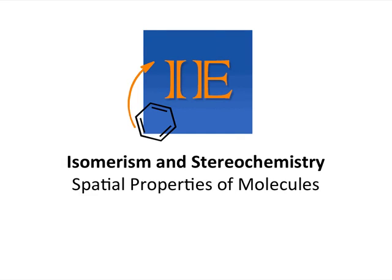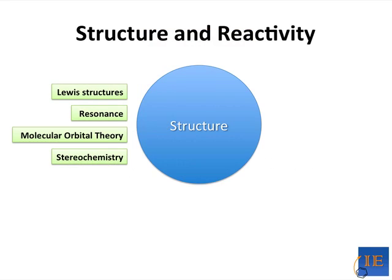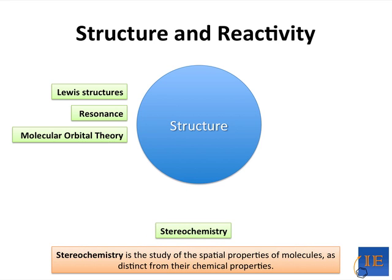In this next series of videos, I'm going to be talking about isomerism and stereochemistry, and really get you thinking about the spatial properties of molecules. Up to this point, we've talked a little bit about atoms and bonds, but in this next series of videos, we're going to consider molecules as spatial entities. This is the next logical step in discussing chemical structure, where we've covered Lewis structures, resonance, and MO theory. Now we're moving on to stereochemistry, which is the study of the spatial properties of molecules as distinct from their chemical properties.